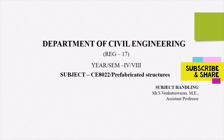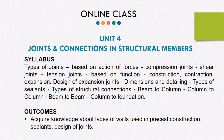In this lecture we are going to discuss the fourth unit, which covers joints and connections involved in prefabricated structural members. The syllabus for this unit includes joints and connections based on the action of force, functions and types of structural connections such as beam to column, column to column, beam to beam, and column to foundation. We will also cover types of walls used in precast construction and the design of joints.